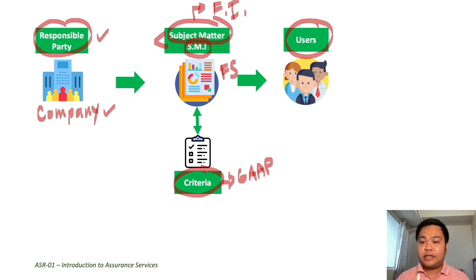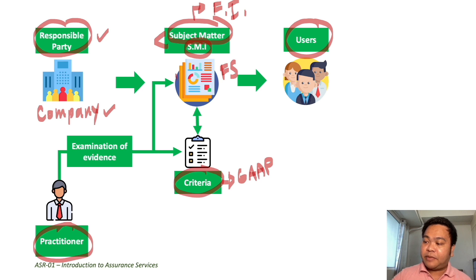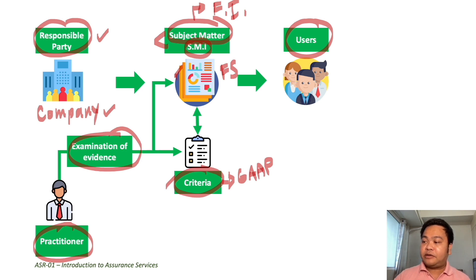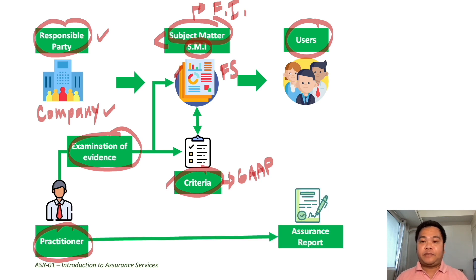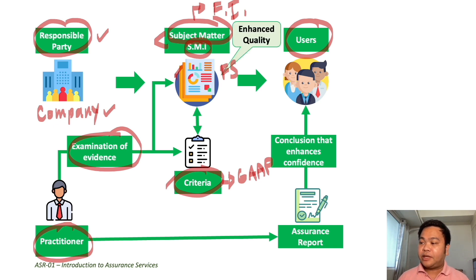That is where the assurance provider comes in. The practitioner is hired to ascertain the degree of correspondence between the subject matter information and the criteria. After the practitioner satisfies himself or herself through procedures and examination of evidence — whether the information in the subject matter information conforms with the criteria — the practitioner will issue an assurance report. The assurance report contains the conclusion that enhances the confidence of the users about the information being provided to them. In summary, the output of an assurance engagement is the enhanced quality of the information after validation by an independent third party, the practitioner.